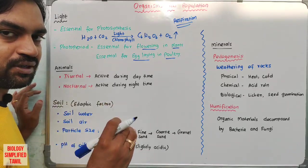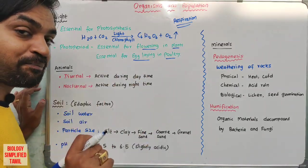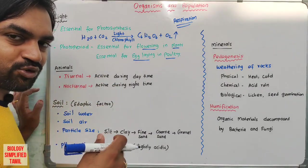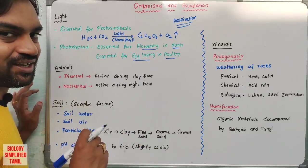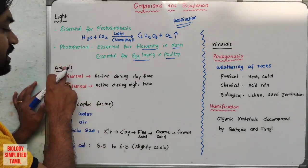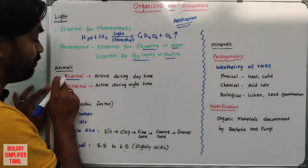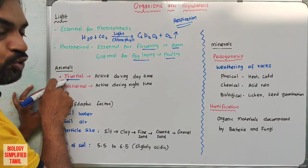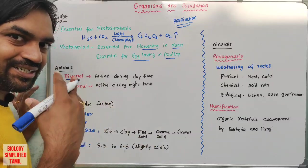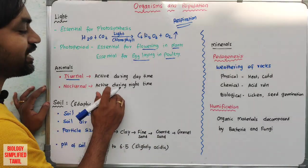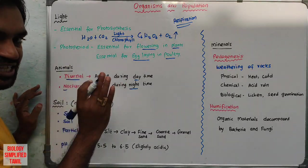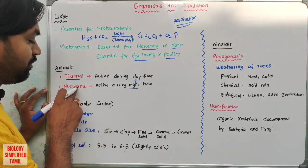Poultry refers to birds we culture. Birds lay eggs during a certain period of light. In artificial poultry farming, light periods are controlled to increase egg production. Animals active during day time are called diurnal animals. Animals active during night time are called nocturnal animals.